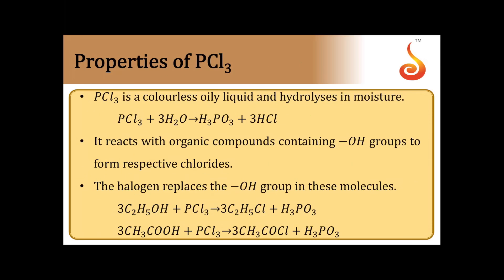Now let us see the properties of PCl3. First, PCl3 is a colorless oily liquid and hydrolyzes in the presence of moisture. So when it reacts with moisture it forms H3PO3. During hydrolysis reactions we can remember one point: the oxidation state will always remain constant. Here phosphorus is in the +3 state, and it remains +3 after hydrolysis — so during hydrolysis the oxidation state of the central element remains constant.